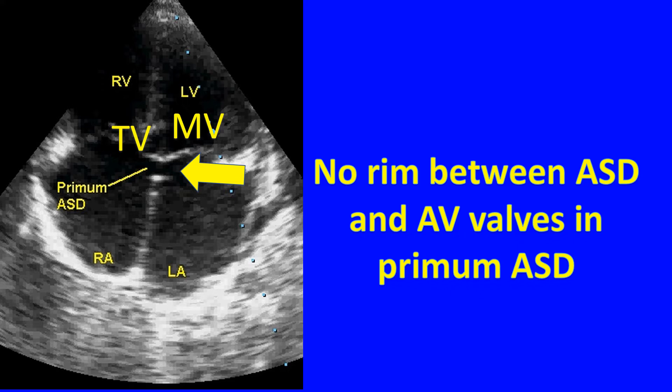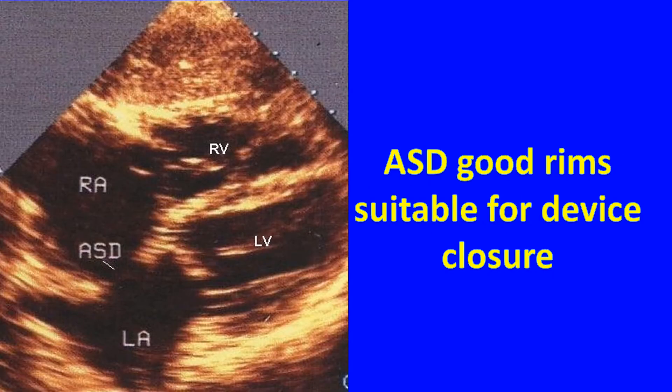Both AV valves are at the same level in primum ASD. In sinus venosus ASD, the superior rim will not be present.